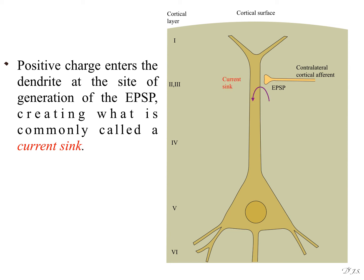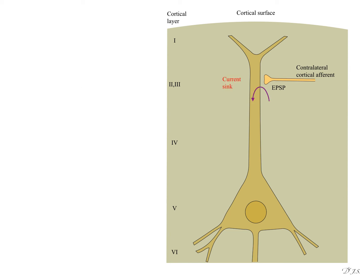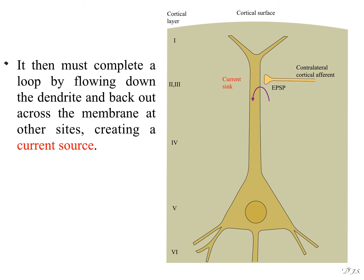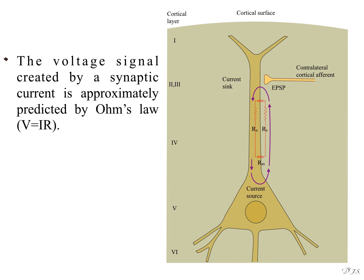creating what is commonly called a current sink. It then must complete a loop by flowing down the dendrite and back out across the membrane at other sites, creating a current source. The voltage signal created by a synaptic current is approximately predicted by Ohm's law: V equals IR.